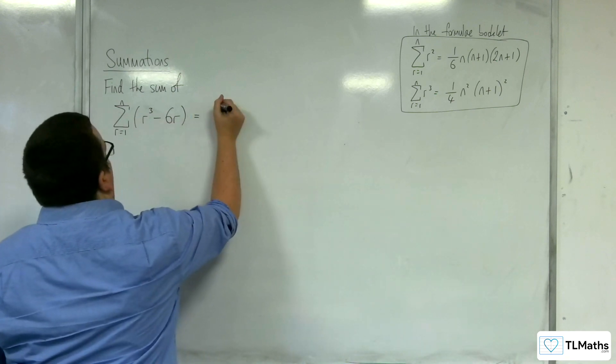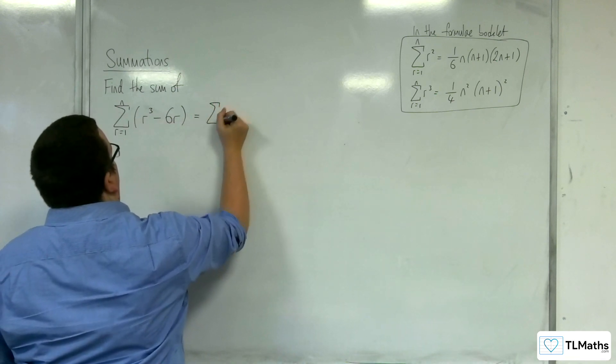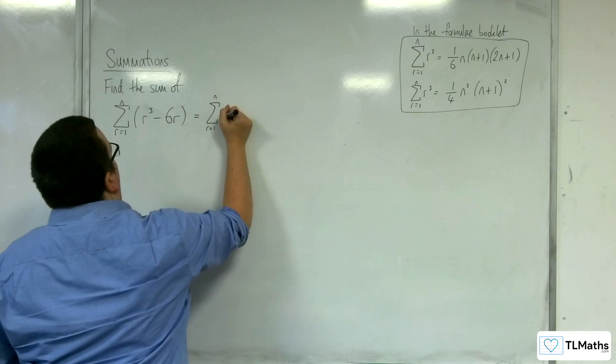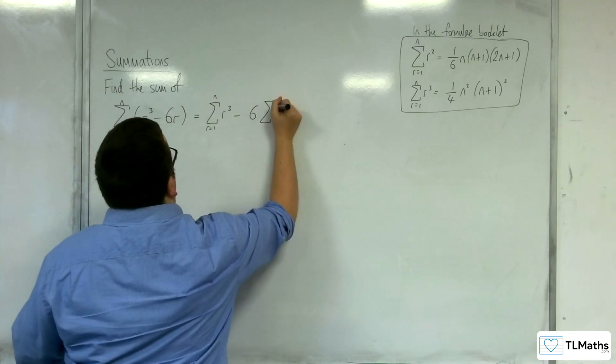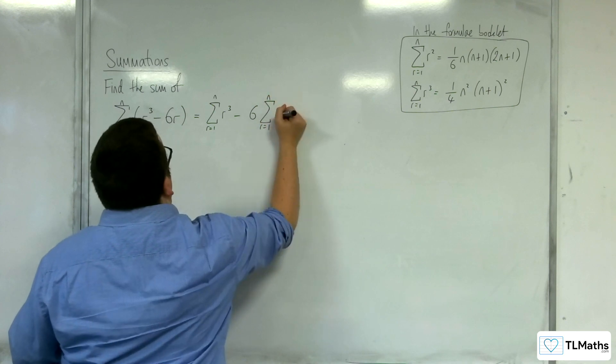So we're going to split this up into the two separate summations. So from r equals 1 to n of r cubed, take away 6 lots of the summation from r equals 1 to n of r.